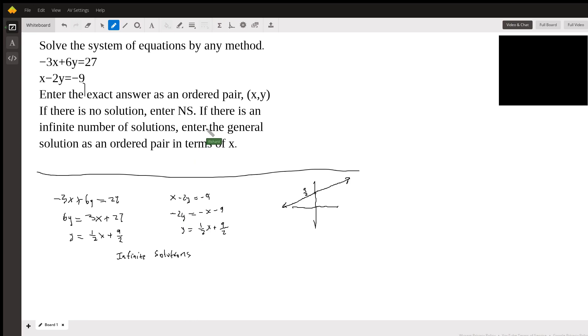And now they want to enter the general solution as an ordered pair in terms of x. So I would say, I think if I'm understanding this correctly, it would be an ordered pair, x comma y. Instead of staying y, we're just going to give the expression for y. So it's going to be one-half x plus nine-halves.